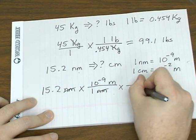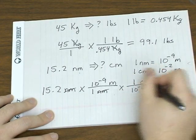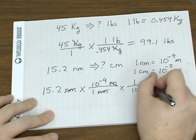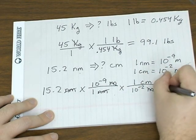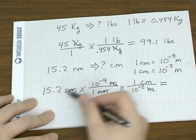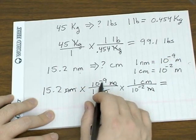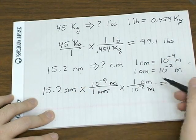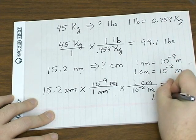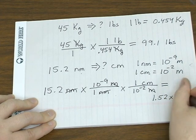So we use that second conversion factor. Meters is on top here, so it needs to be on the bottom. Again, the meter unit drops out. Now we're at the unit we want. So now you go back and you look to see where you multiply and where you have to divide. So it looks like we've got to multiply by 10^-9, divide by 10^-2. And that gives us 1.52 × 10^-6.